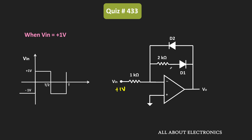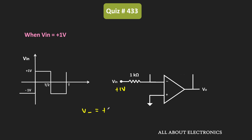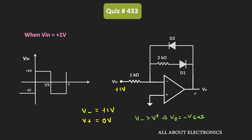Let us assume that the op-amp is operating in the open loop condition. Whenever the input is equal to plus 1V, the voltage at the inverting terminal will be equal to plus 1V. The non-inverting terminal is connected to ground, so V+ equals 0V. Since V minus is greater than V plus, the output voltage of the op-amp will be equal to minus Vsat, the negative saturation voltage. That same negative voltage will appear at the cathode of diode D1, and since the anode of D1 is connected to V minus, this diode D1 will conduct.